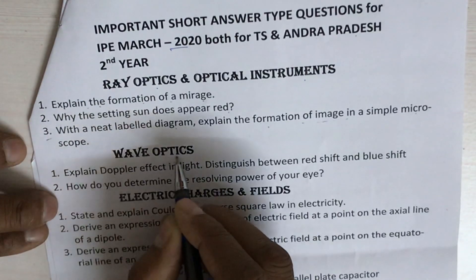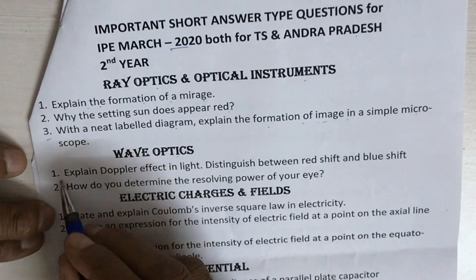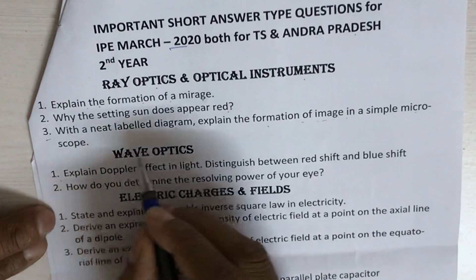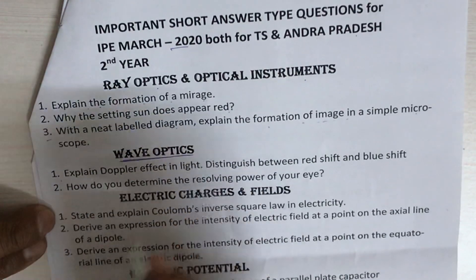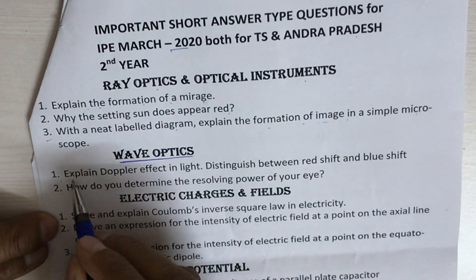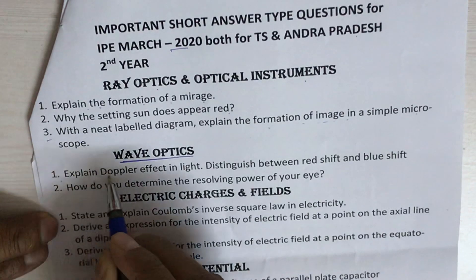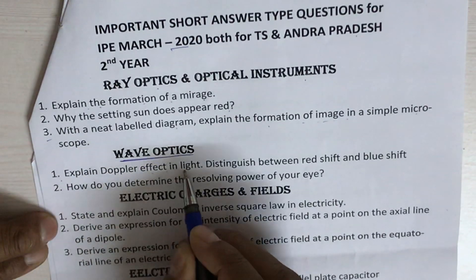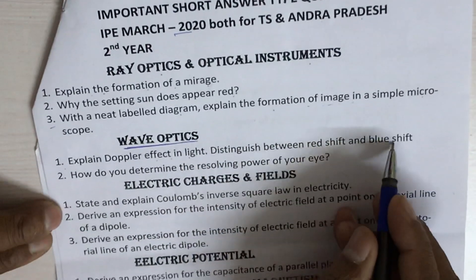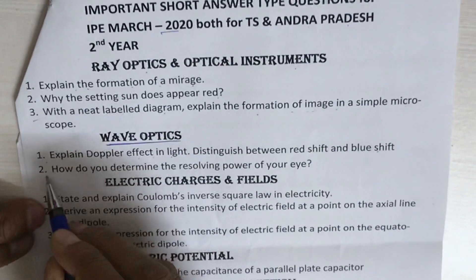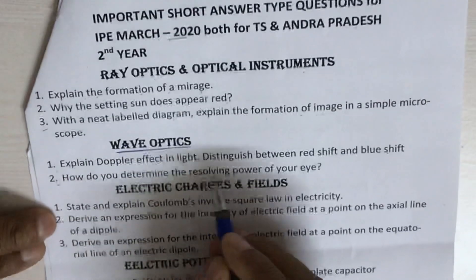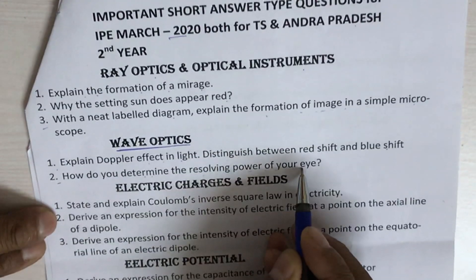The next topic is Wave Optics. The first question is: explain the Doppler effect in light, and distinguish between red shift and blue shift. The second question is: how do you determine the resolving power of your eye?